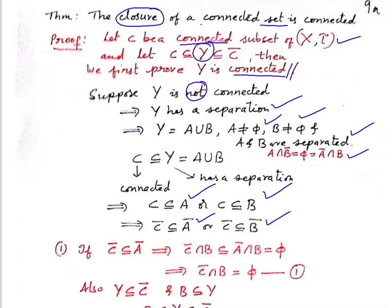Case 1: Suppose C-bar is contained in A-bar. We take the intersection with B on both sides, so we get C-bar ∩ B ⊆ A-bar ∩ B. Since A-bar ∩ B = ∅, we get C-bar ∩ B = ∅. Call this equation (1).